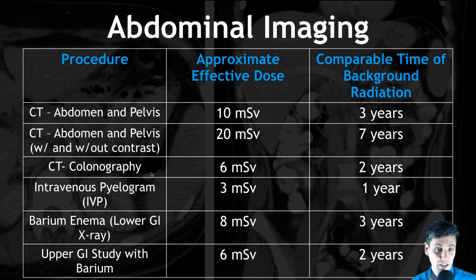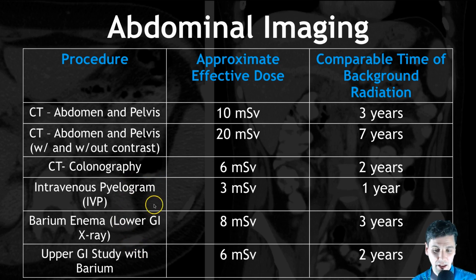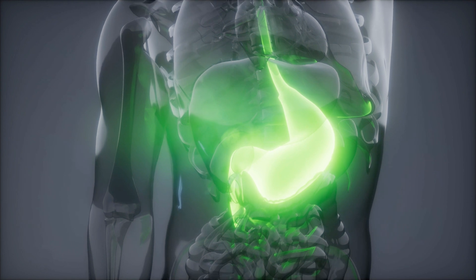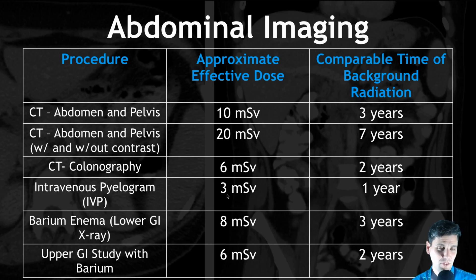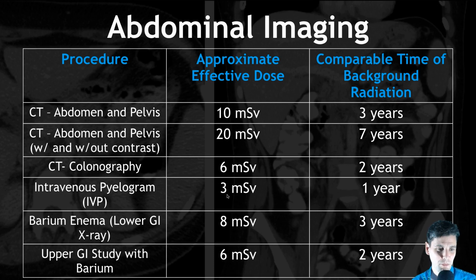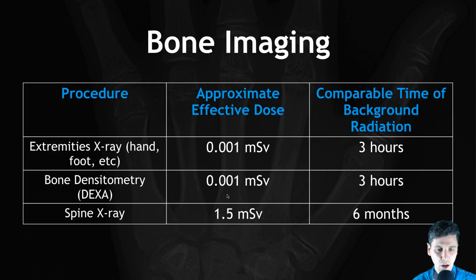CT colonography is six millisieverts — about two years — and all we're doing is taking these numbers and dividing them by three to get the equivalent years of background radiation. We can see that for each of these x-ray procedures, we're at similar dose levels, looking at between one to three years' worth of comparable background radiation for these abdominal imaging procedures.